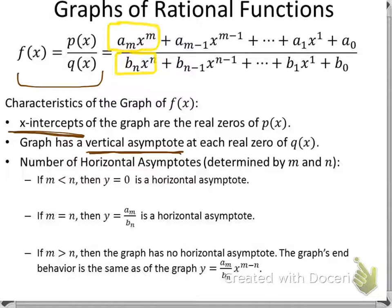The last characteristic is the horizontal asymptotes. We look at the degrees of the lead terms, x to the m and x to the n. If m is less than n — for example, 2x squared over x cubed — then the degree of the numerator is less than the denominator, so y equals 0 is a horizontal asymptote.